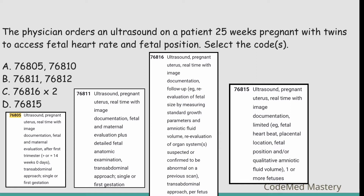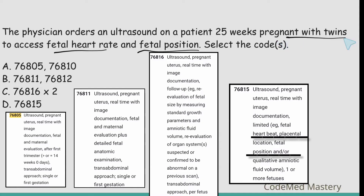The right code is 76815 — ultrasound, pregnant uterus, real-time with image documentation, limited. It mentions fetal heartbeat, placental location, and fetal position, which matches the question's fetal heart rate and fetal position. It also specifies one or more fetuses, and the patient is pregnant with twins. So 76815 is matching with the question.